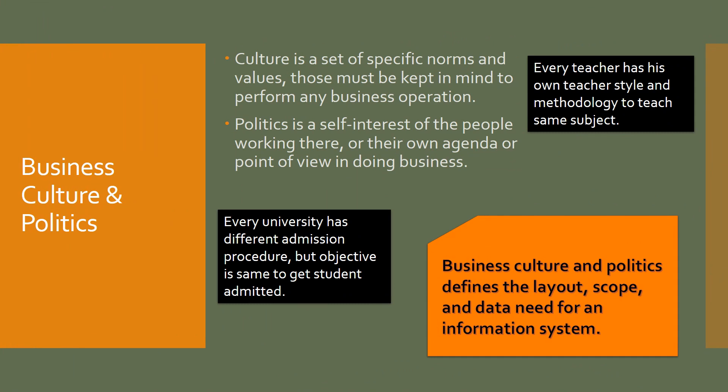Business culture and politics are a little complex to understand. Culture consists of certain norms and values that must be followed in doing business — for example, every university has its own unique admission procedure that is traditionally followed. These norms and values also affect the information system, which must be customized to adjust to the business culture. Politics refers to the personal point of view of managers in performing activities — for example, in teaching, every teacher has their own teaching style. For this purpose, the information system must have the capabilities to adjust to the customized needs of each manager.